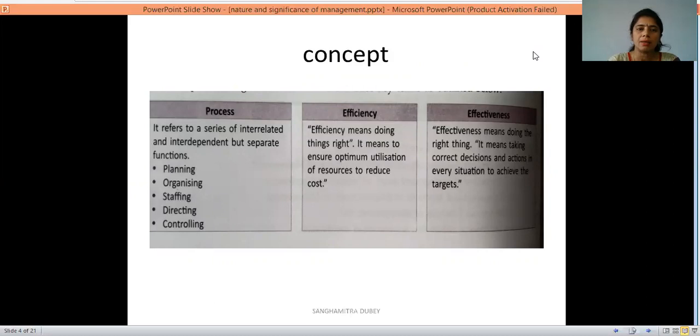I have told you the meaning of process here. It refers to a series of interrelated and interdependent but separate functions. In the process, we utilize these five functions: planning, organizing, staffing, directing and controlling.